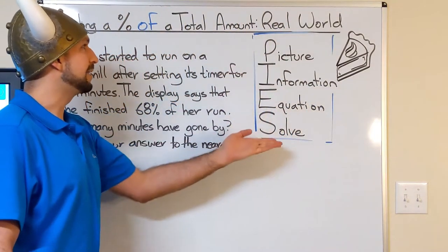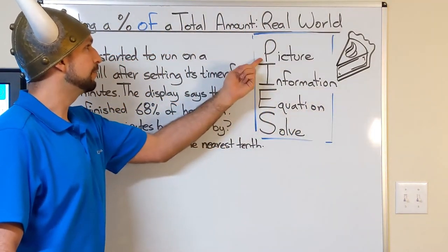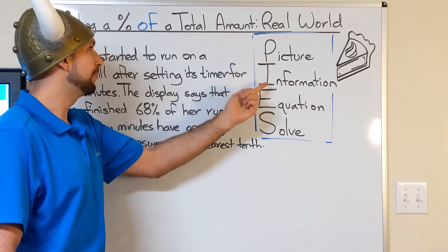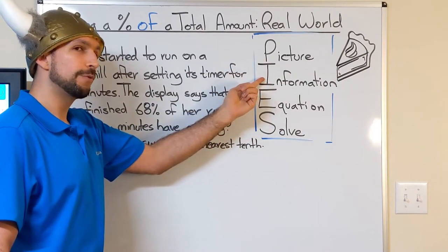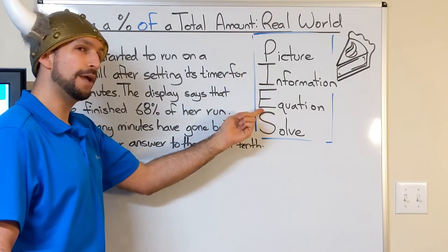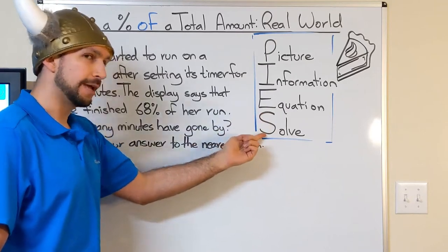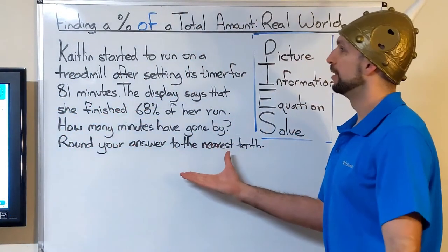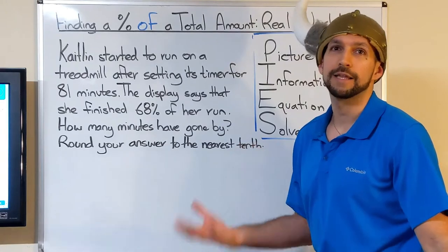The strategy is called PIES. We're going to draw a picture or a chart or graph, highlight the important information, write an equation, and then solve it.